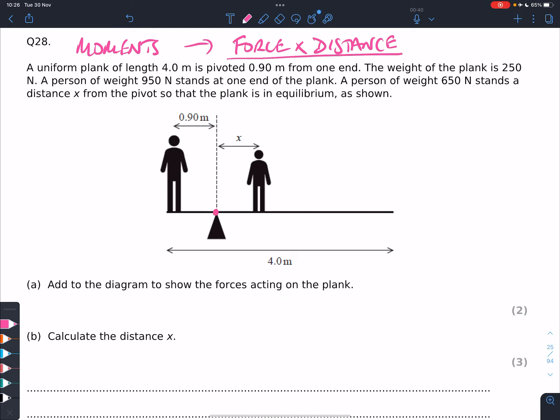In this case, the pivot point is the tip of there, the triangle there, and we've got three forces to think about. We've got the weight of the first, the big person, the weight of the little person, and we've also got the weight of the plank, and that acts through the centre of gravity of the plank.